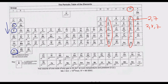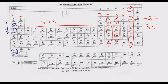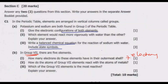Looking at the periodic table groups: group 4 has 4 electrons, group 5 has 5, group 6 has 6, group 1 has 1, group 2 has 2, and group 3 has 3. Transitional elements have a variable valence, where valence refers to the number of electrons in the outermost shell. We now move to Roman numeral 2.